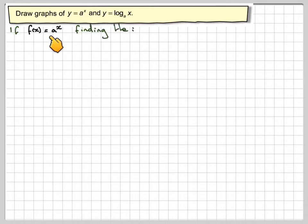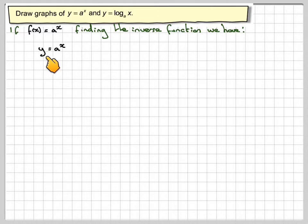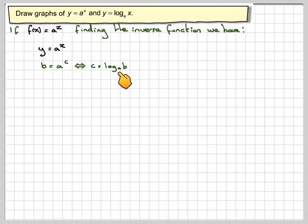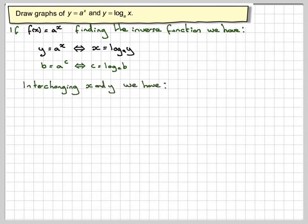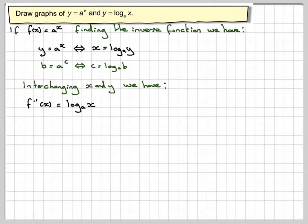So if f of x is equal to a to the x, we're finding the inverse function. We let y equal to a to the x, and then we know that b implies that c is equal to log to the base a of b. Applying that here, we get that x is equal to log to the base a of y. Then, finding the inverse function, we interchange the x and the y, and we have that the inverse function, written as f to the minus 1 of x, is equal to log to the base a of x.